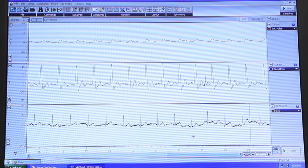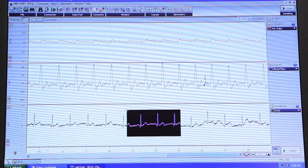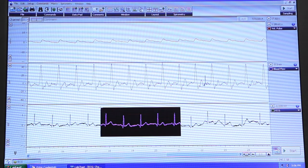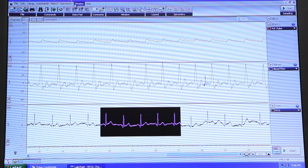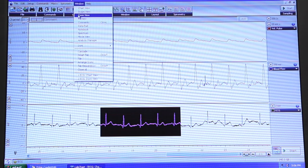Next, highlight about 3 seconds of your ECG recording by clicking and dragging the mouse. On the toolbar at the top of the screen, click on window and then select zoom view.